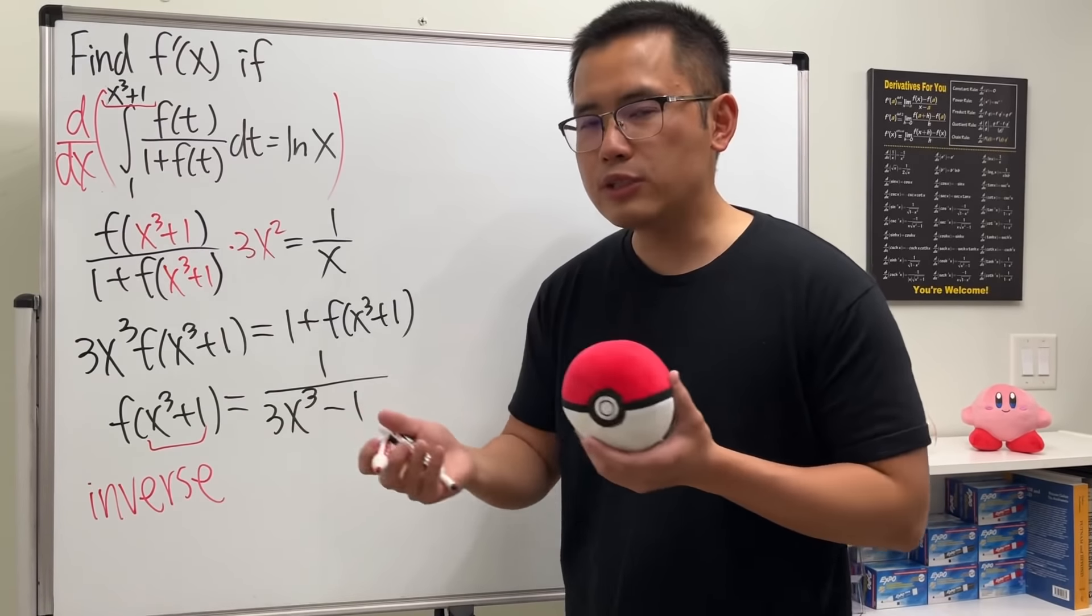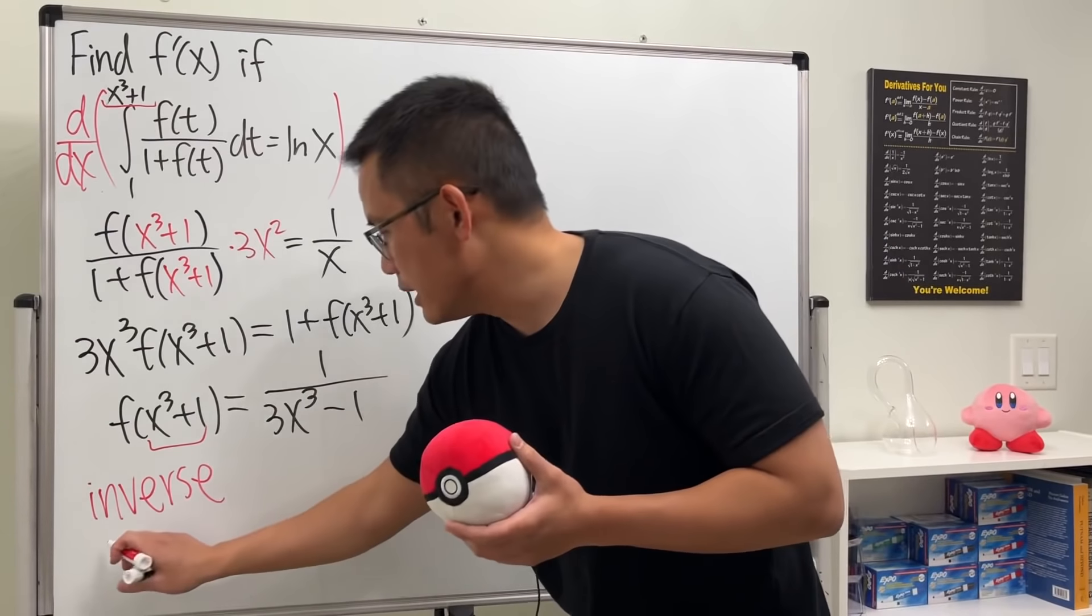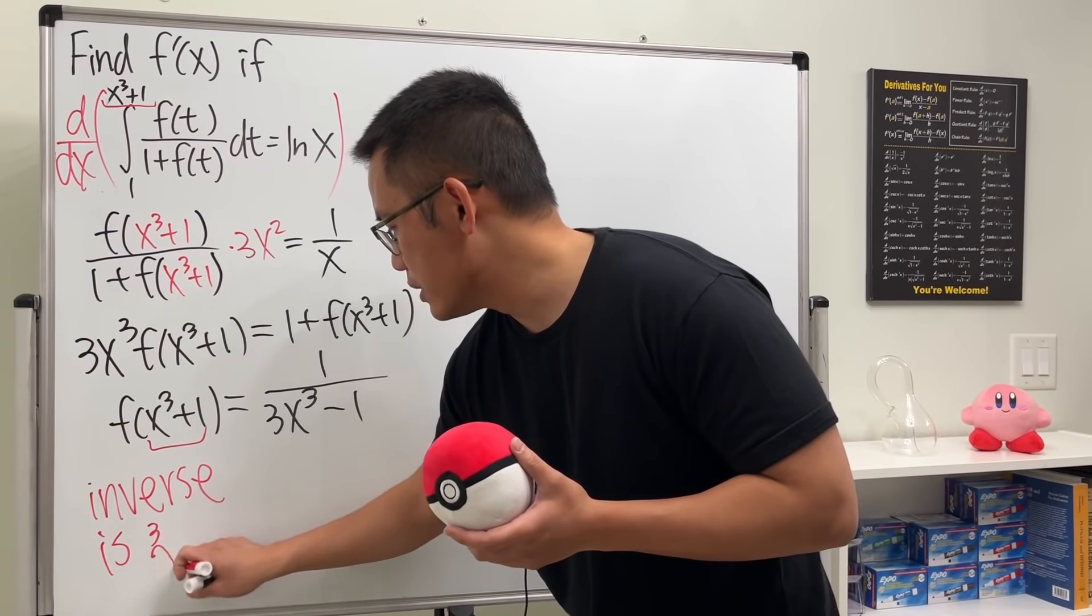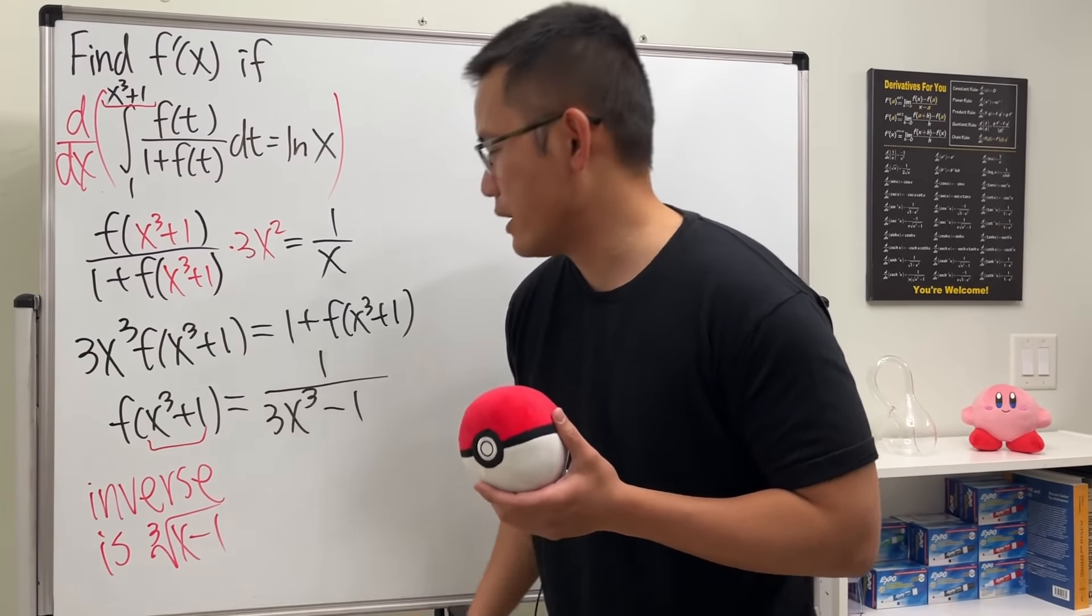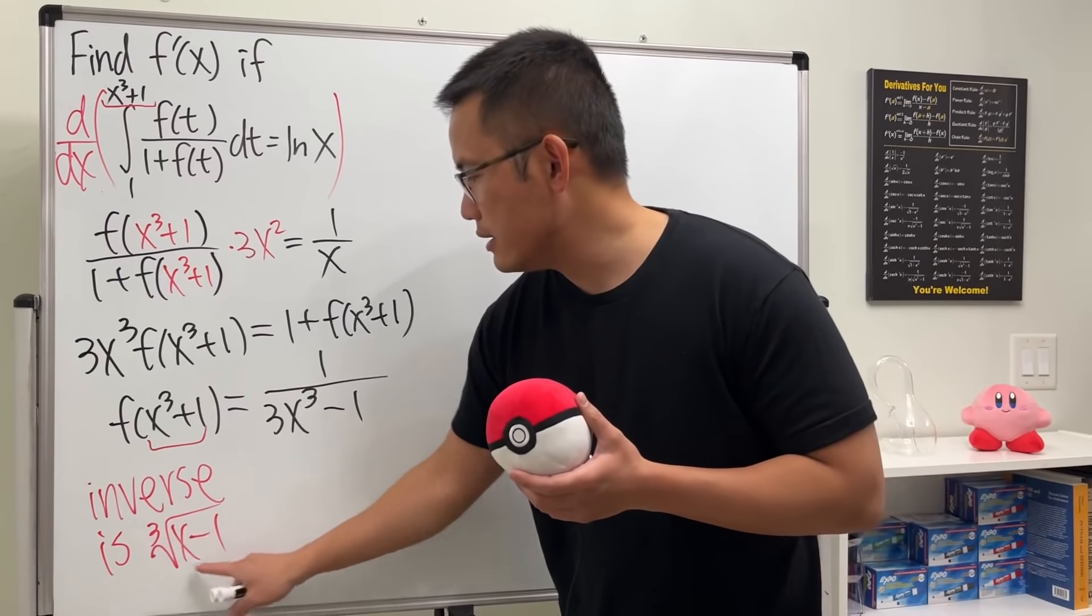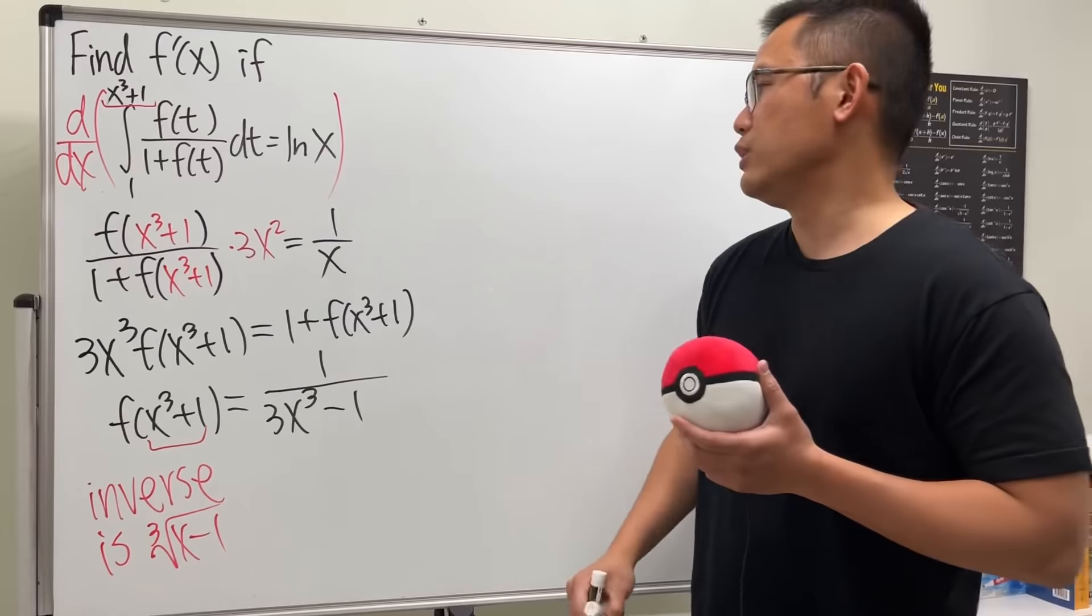The inverse of x^3 + 1. Well, we just have to minus 1 to x first and take the cube root. So the inverse is the cube root of x - 1. And then we're just going to be plugging this into the x here and also the x here. And you will see why.